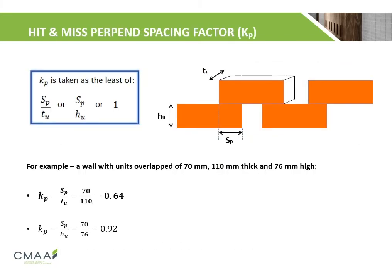While the perpen spacing factor Kp is commonly taken as 0.6 for hit-and-miss walls, Kp must be calculated with respect to the problem at hand. Kp is taken as the least of: unit overlap divided by the thickness of the unit, unit overlap divided by the height of the unit, or 1. For example, a wall with a unit overlap of 70 mm, 110 mm thick, and 76 mm high gives a Kp calculated to be 0.64.